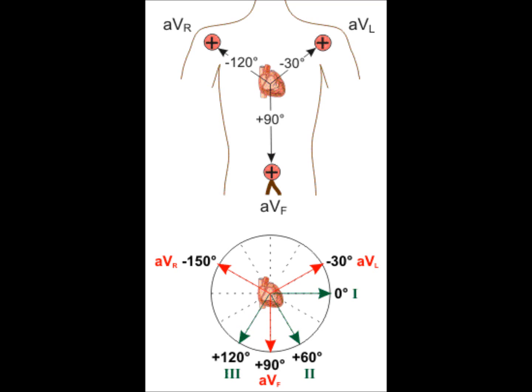The unipolar leads consist of a single positive electrode and a reference point. This reference point lies in the center of the heart's electrical field. Leads AVR, AVL, AVF are all unipolar leads.